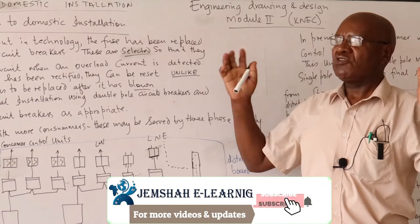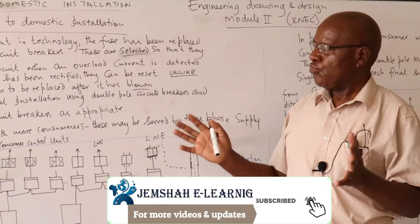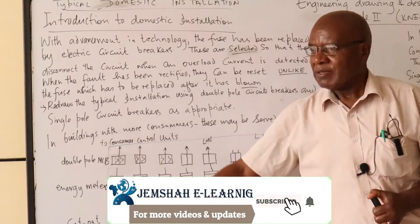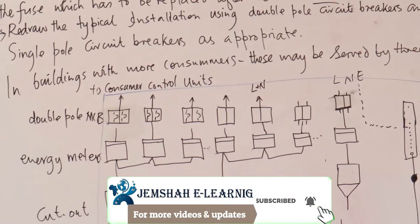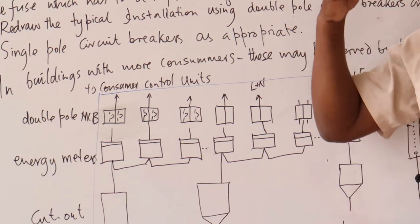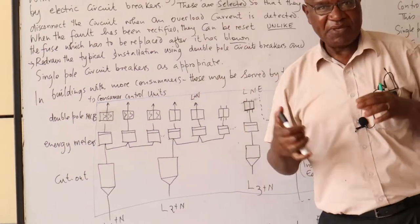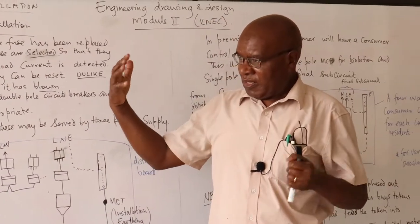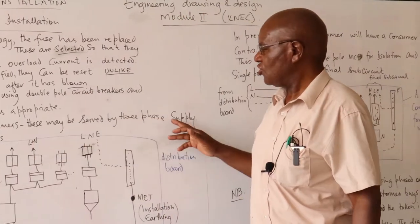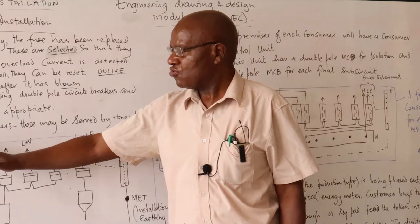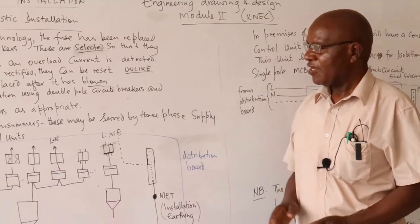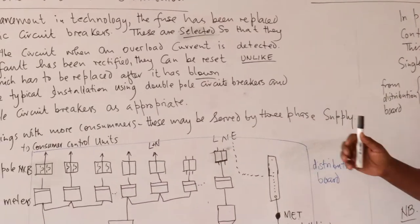That typical installation was basically for one unit. Now if you proceed and suppose you have a building with more consumers — depending on the supply, when you apply to the KPLC, if it's a big installation, you normally apply for a three-phase installation. So big buildings with more consumers, depending on the number, they will provide you with a three-phase power supply.